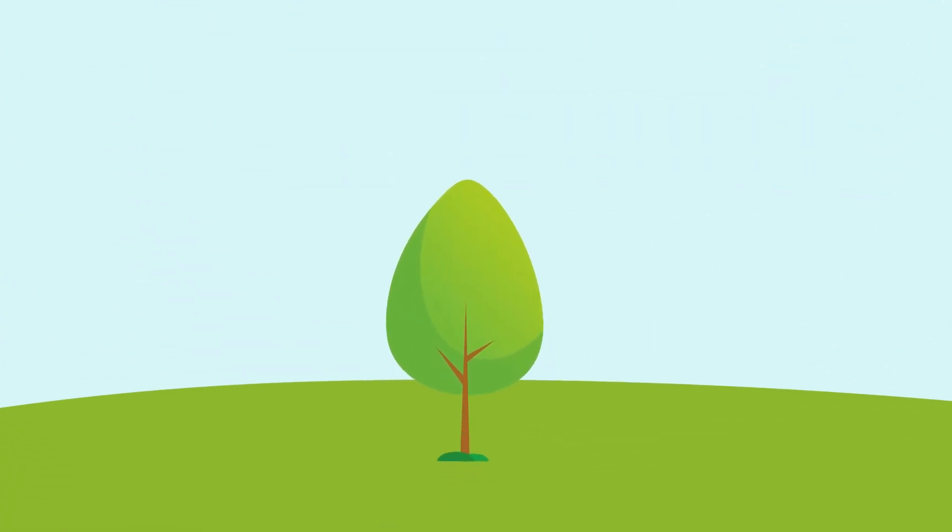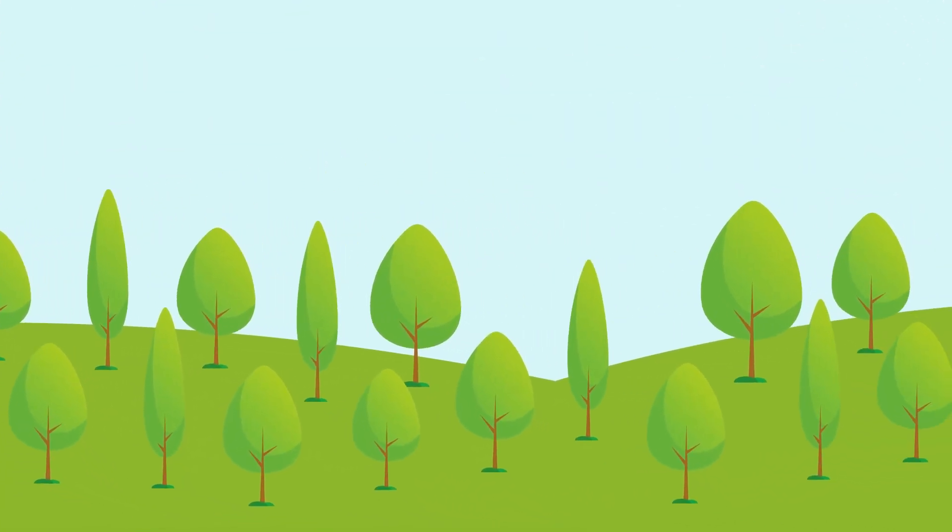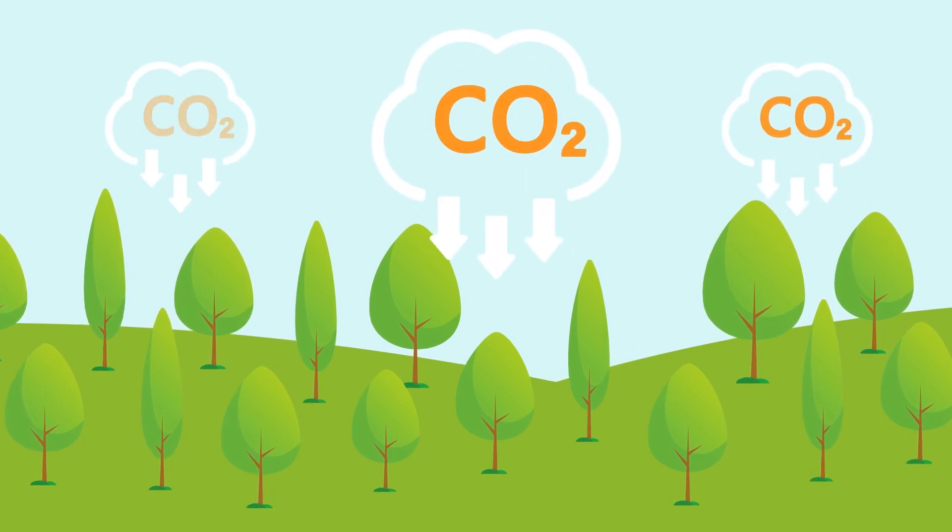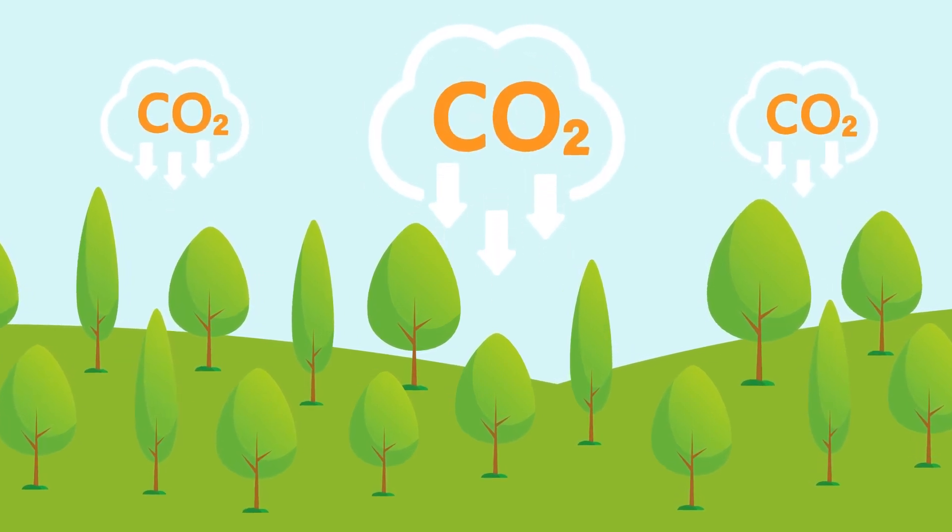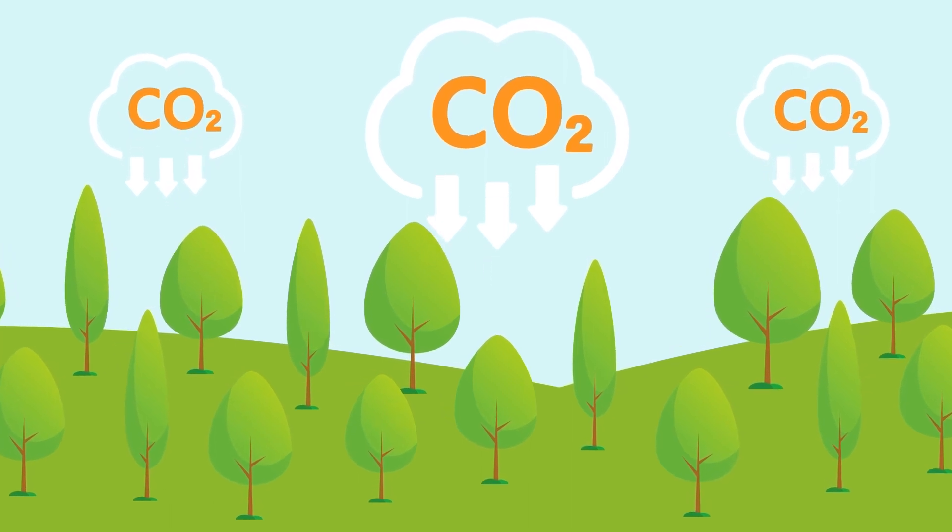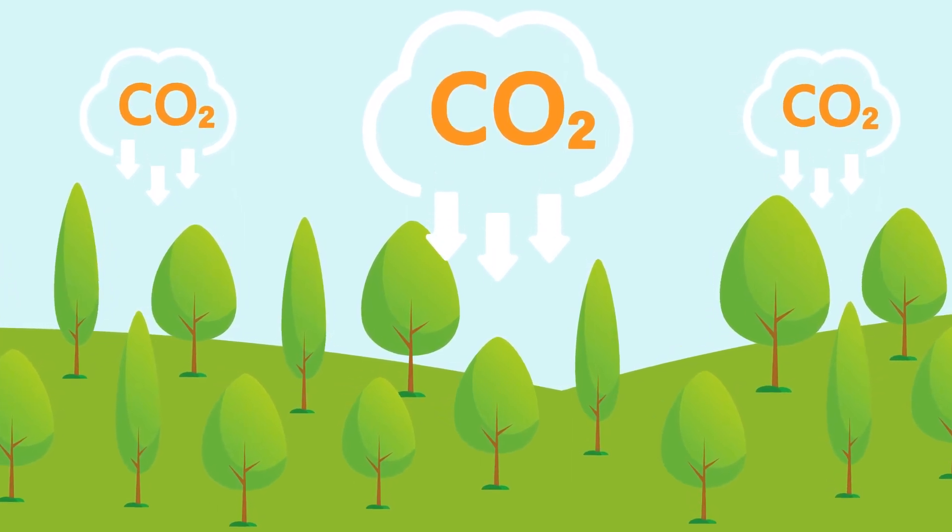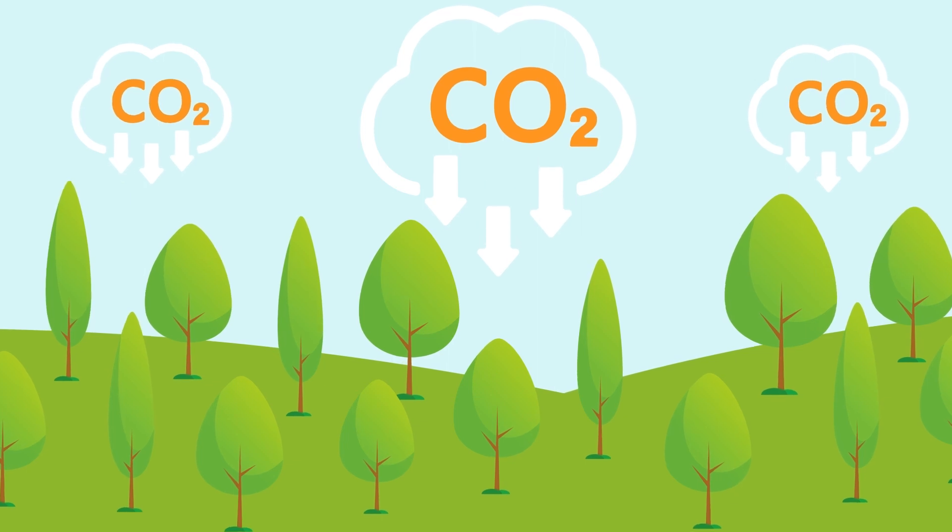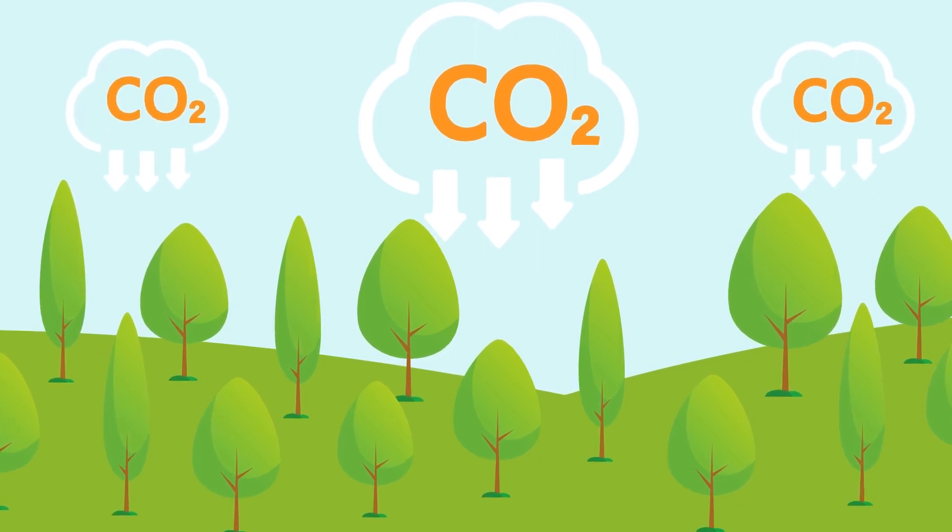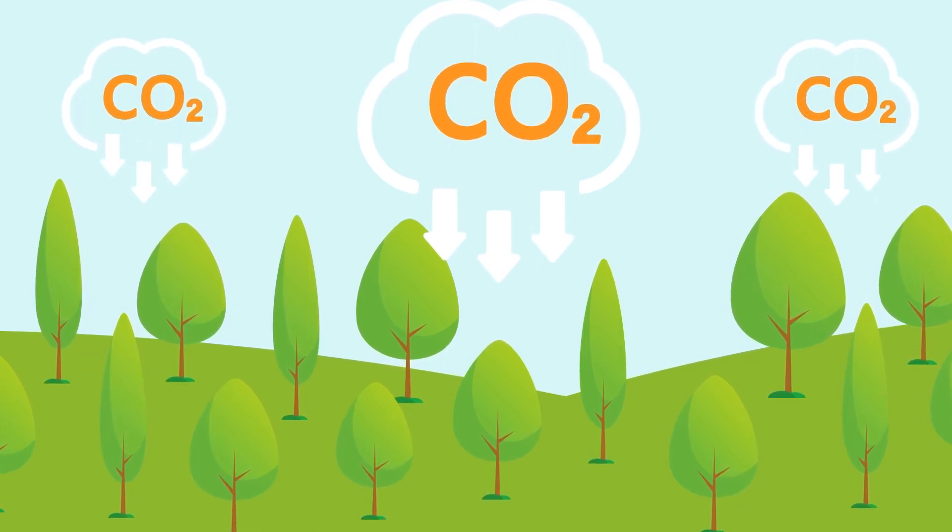For every tree cut down, two are planted to replace it, ensuring the forest remains sustainable. And any CO2 released when the wood fuel is burned is absorbed by the existing and newly growing trees, meaning it is recycled back into the ecosystem. This is why the government wants to grow more trees.